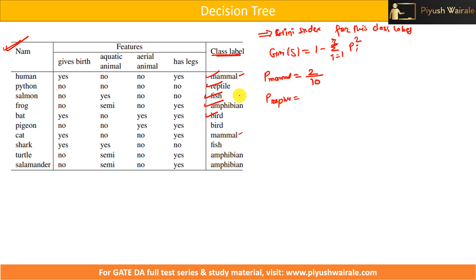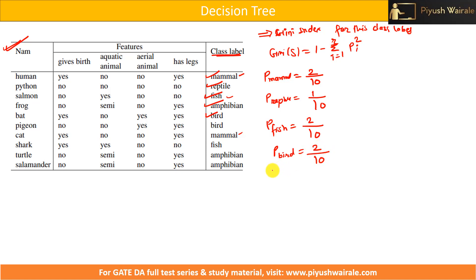Continuing with the probabilities: fish has 2 instances, so P(fish) = 2/10. Birds also have 2 instances, so P(bird) = 2/10. Amphibians have 3 instances, so P(amphibian) = 3/10. These are the probabilities for each of the five class labels across the 10 total instances.